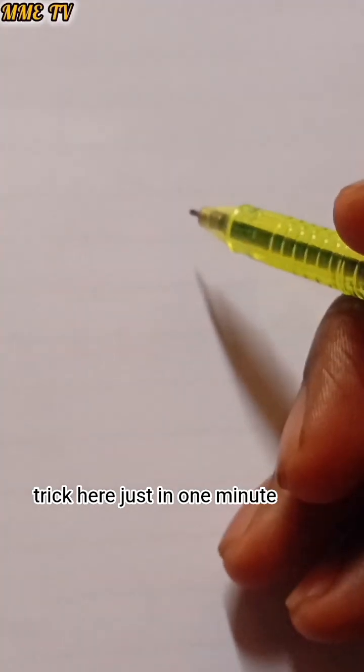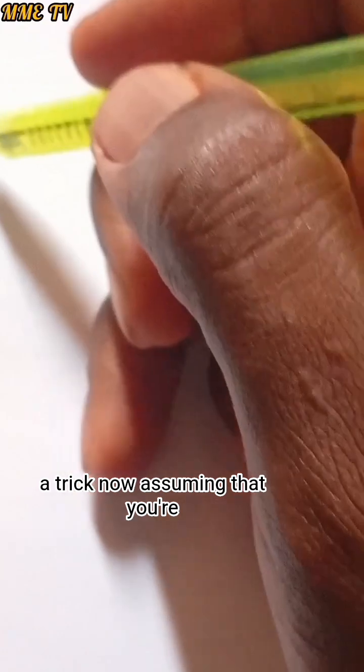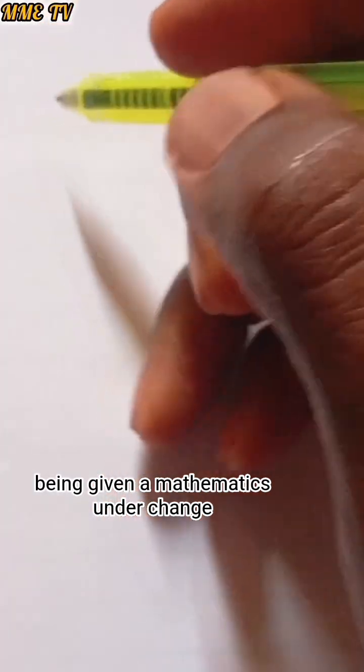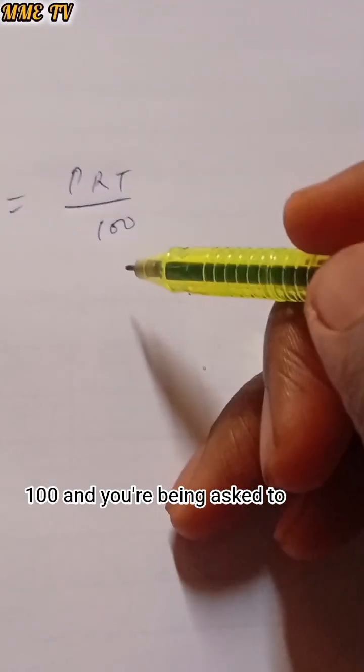Okay, let me show you a trick here in just one minute. Assuming that you're being given a mathematics problem on change of subject of formula, and it's I equals PRT over 100, and you're being